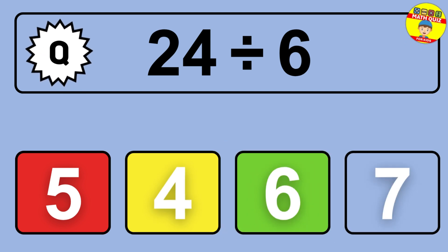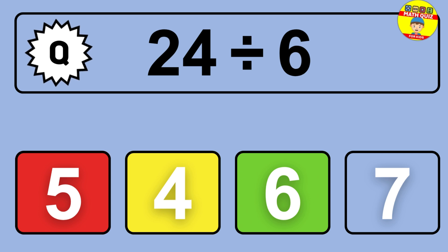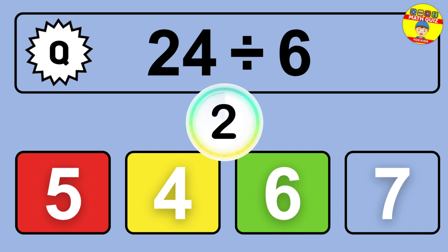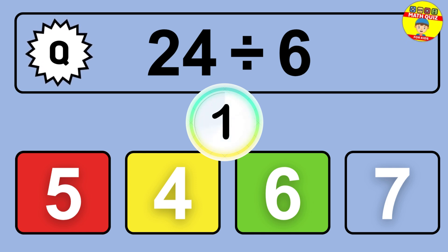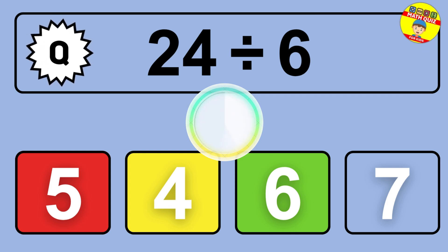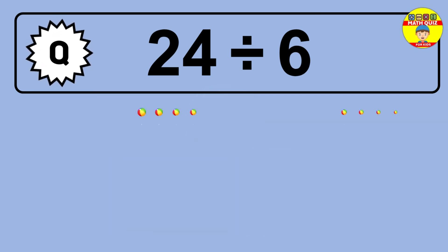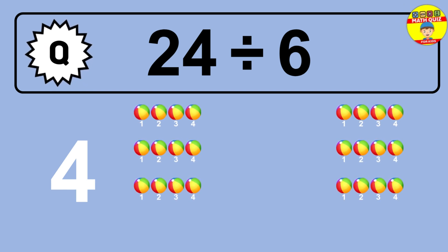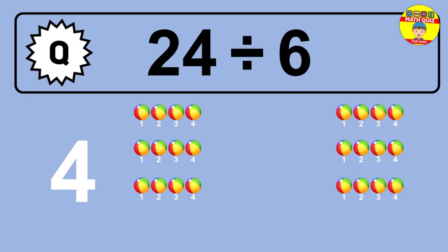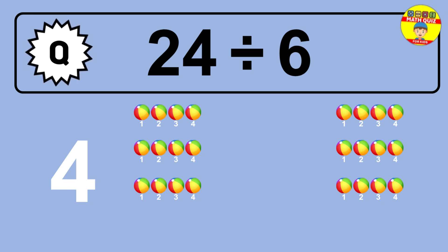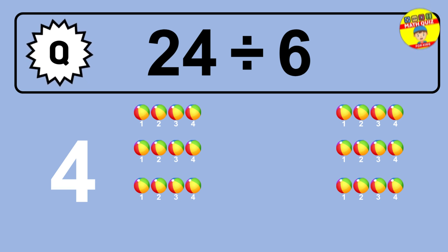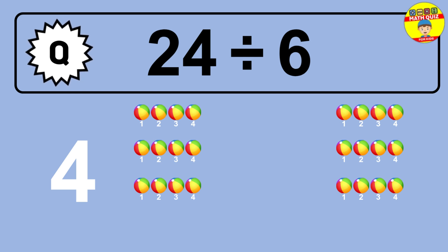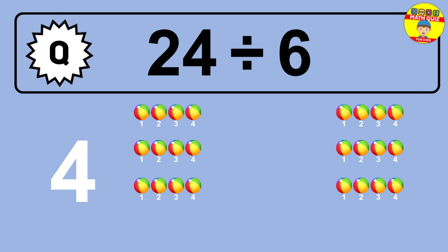24 divided by 6 is... time to think. Let's go to the solution. Divide the number 24 by 6. Each group contains 6 units, so dividing 24 by 6 results in 4 equal groups. Thus, the result is 24 divided by 6 equals 4.